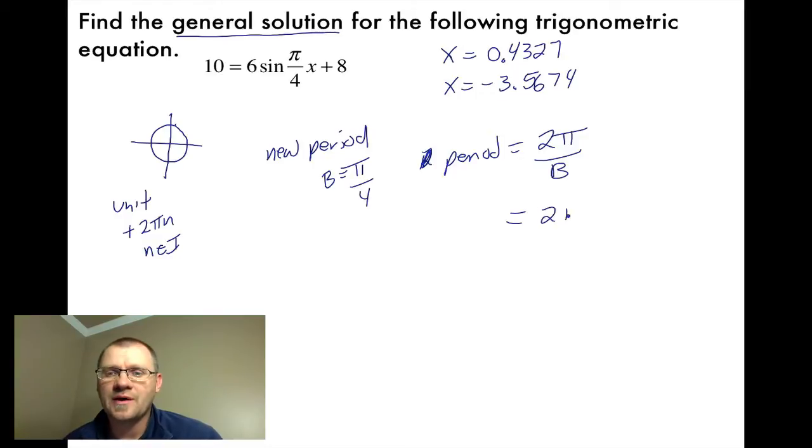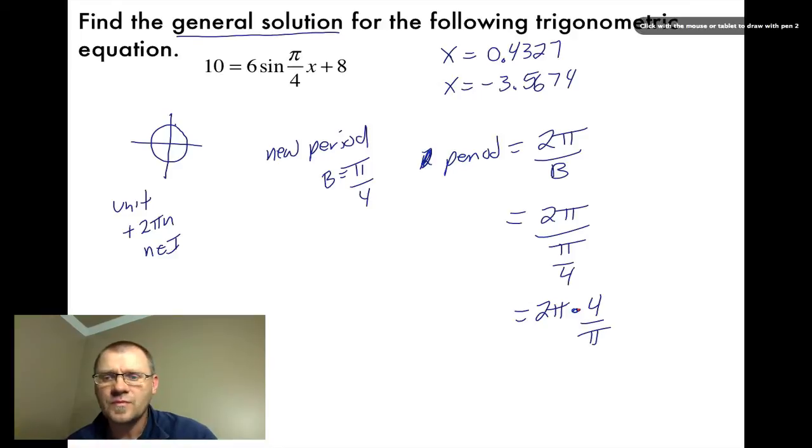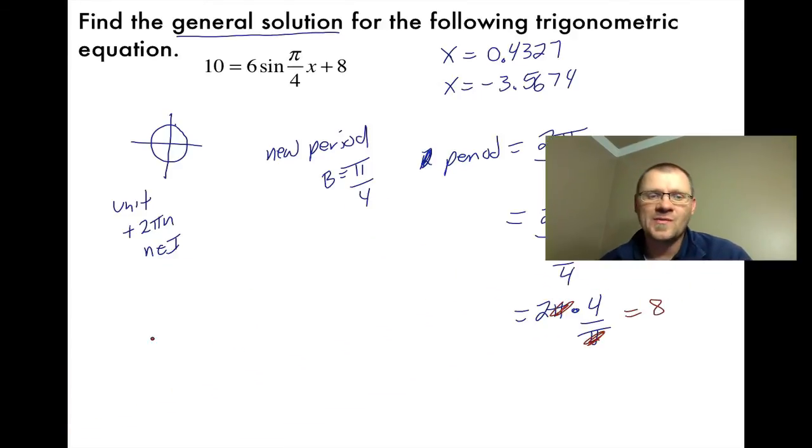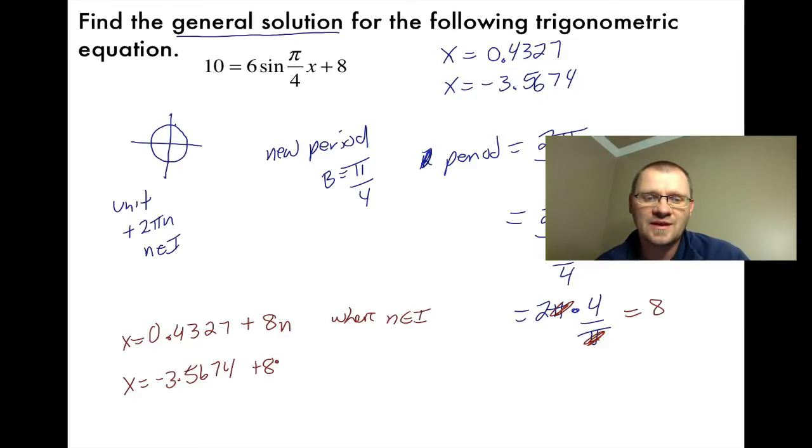We know that this value here is a value for b, so b equals π/4. And we know our period length equals 2π/b. So all we need to do is take this value for b and plug it in here, and we can find our actual period length of this function. If we do that, we get 2π/(π/4). Remember that when you're dividing by a fraction, you can turn that into multiplying by the reciprocal. That means that instead of dividing by π/4, we're now multiplying by 4 divided by π. We can cancel out the π's, and we get a value of 8. So that means our general solution will be x = 0.4327 + 8n, where n is any integer, and the other answer is x = -3.5674 + 8n where n is any integer.